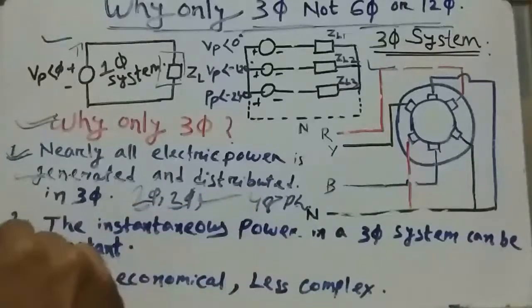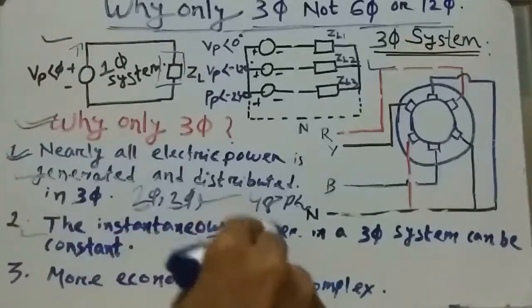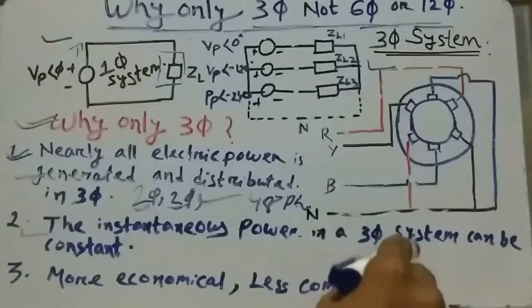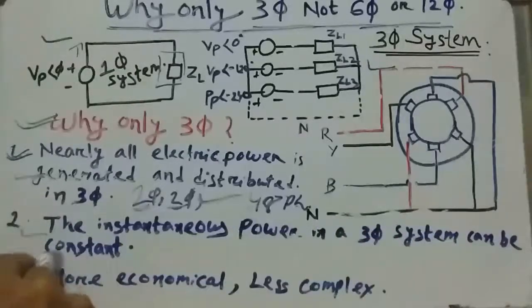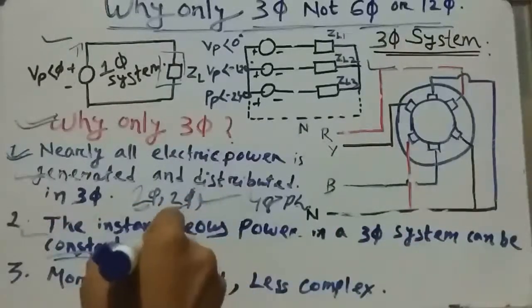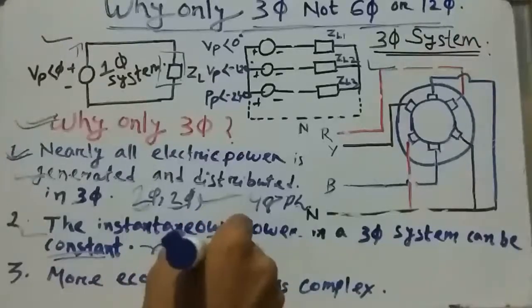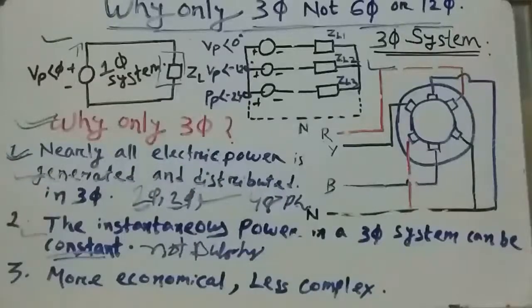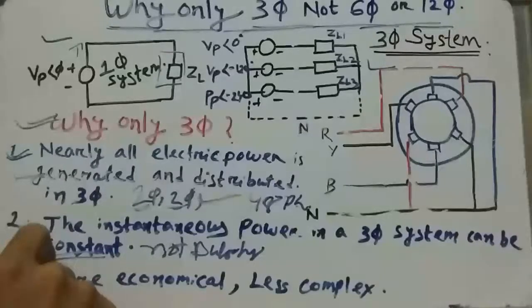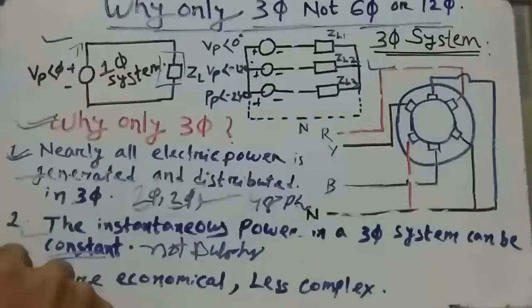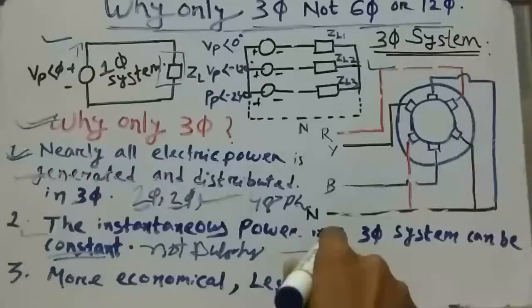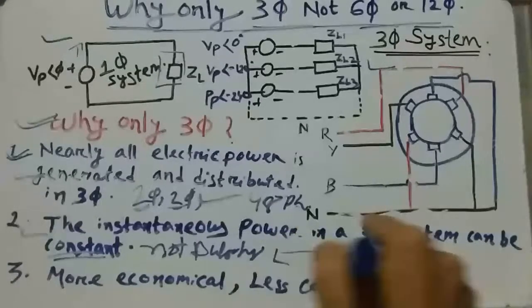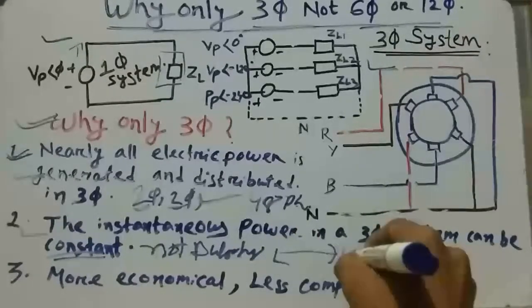Secondly, the instantaneous power in a 3 phase system can be constant, that is not pulsating. And the result is the power can be transferred uniformly.